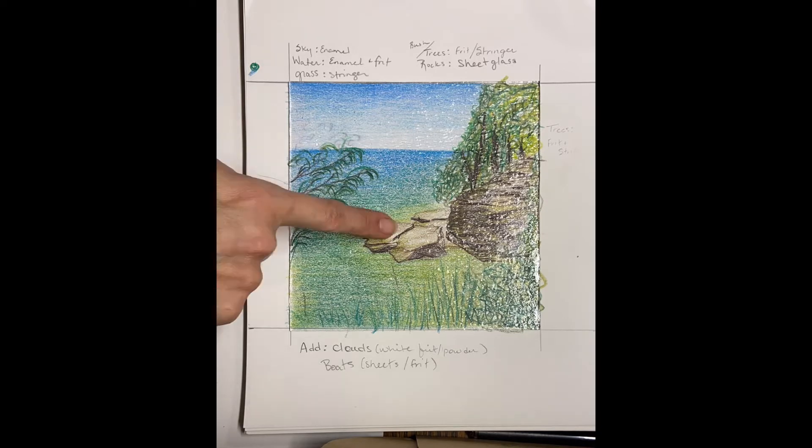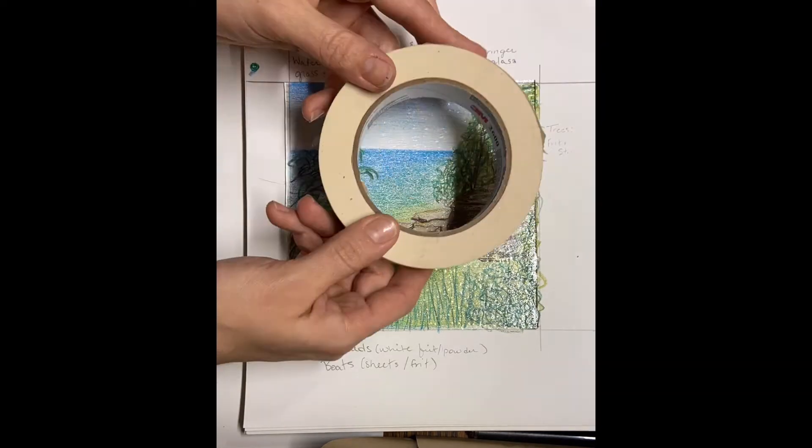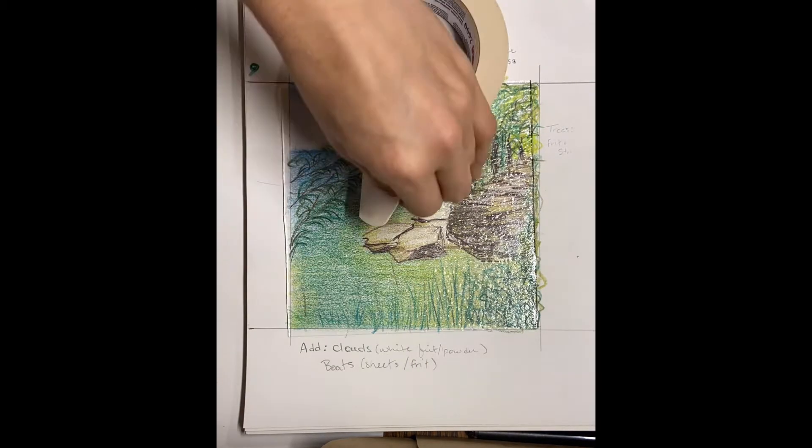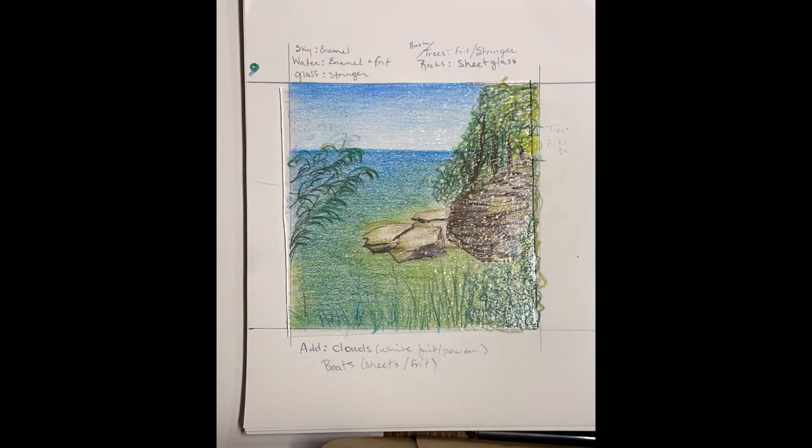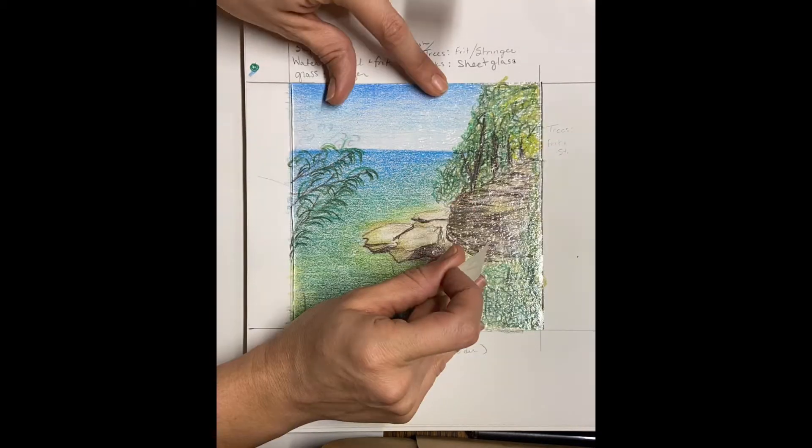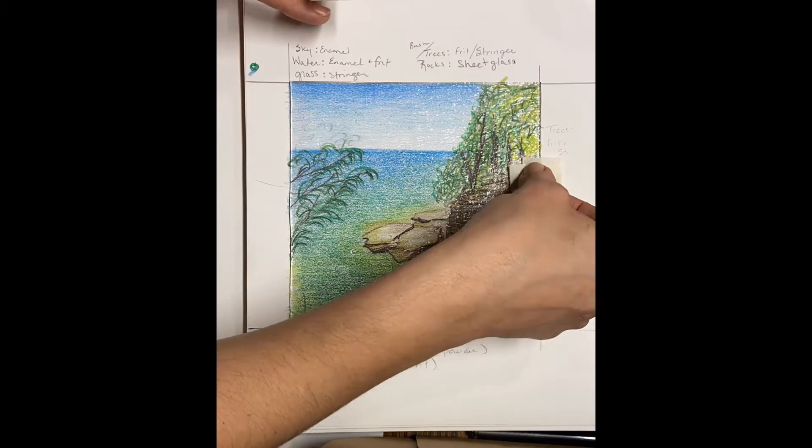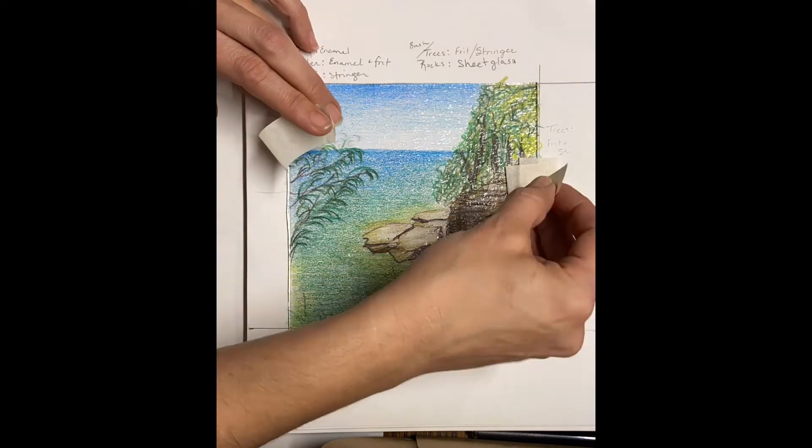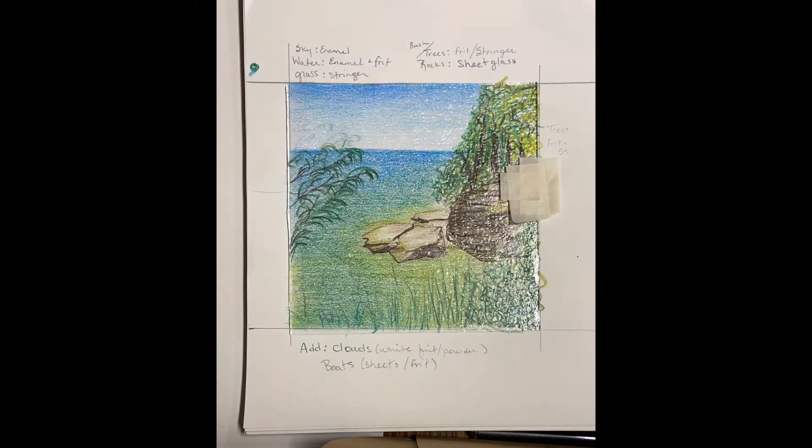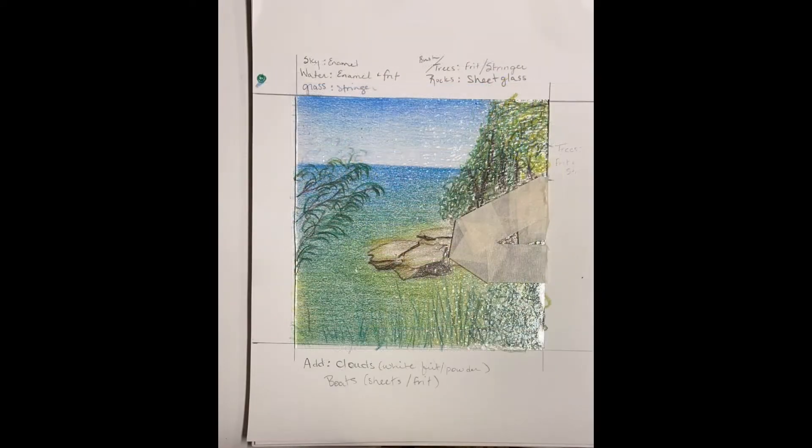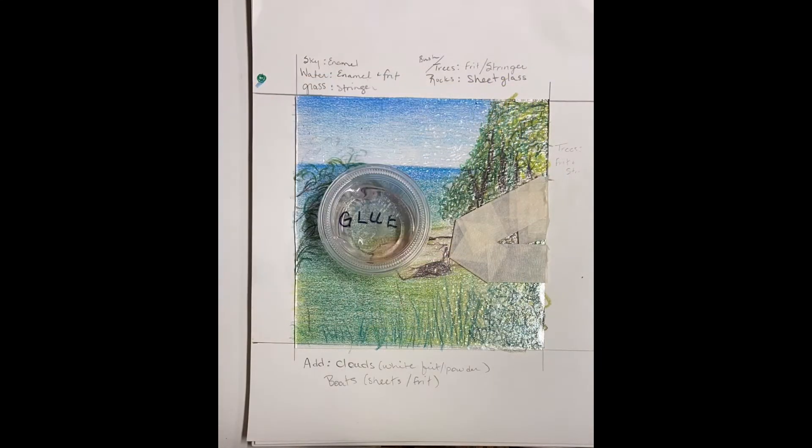Now what you're going to see me doing next is masking off some of the large rock areas because I don't want to get enamel powder in there. The smaller ones I think I'm just going to leave be, and I will be placing my sheet glass on top of some of those layers. But this one here is like a really big chunk, so I'm going to go ahead and just use some tape and cover that up so that when I apply the powder I can easily avoid that area. Totally optional, okay.